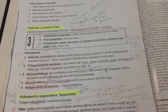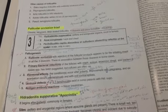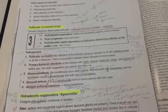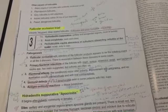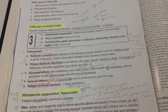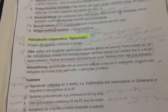The follicular occlusion triad: hidradenitis suppurativa, acne conglobata, perifollicular folliculitis capitis abscedens et suffodiens, or dissecting cellulitis of the scalp. The pathogenesis of which is follicular occlusion, bacterial infection, hormonal effects, immune defects. And we will talk about the hidradenitis suppurativa.